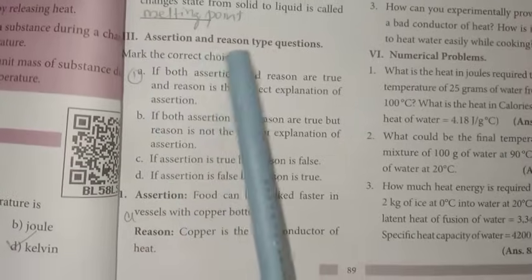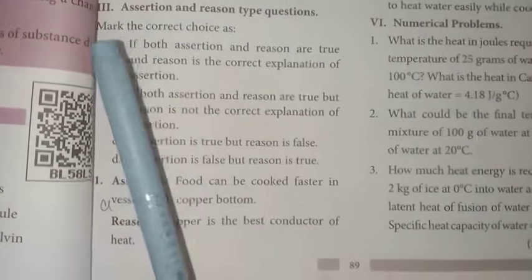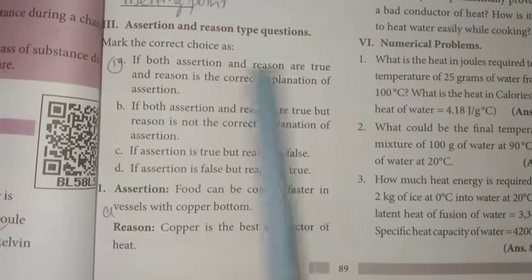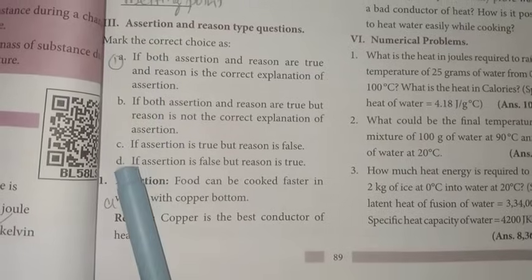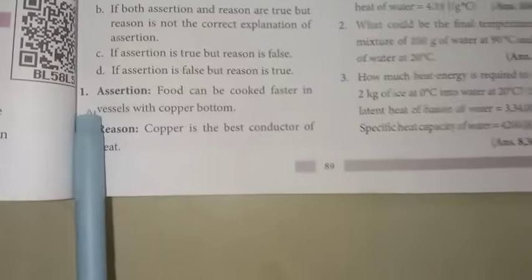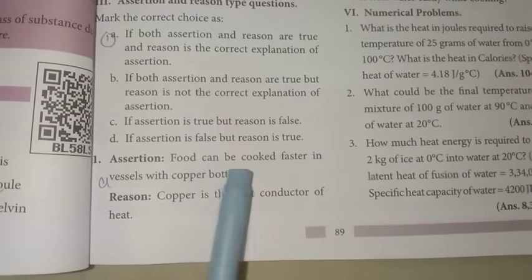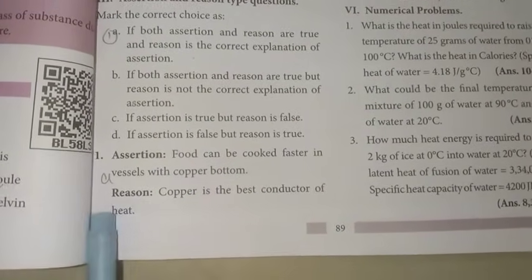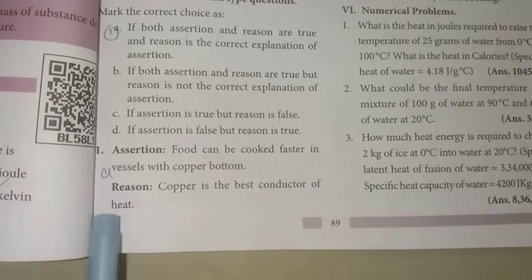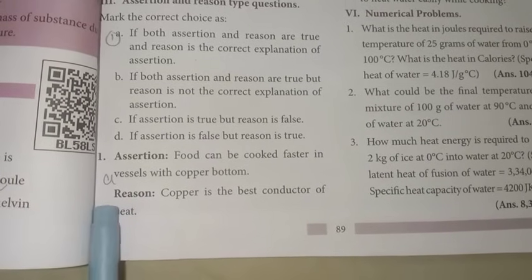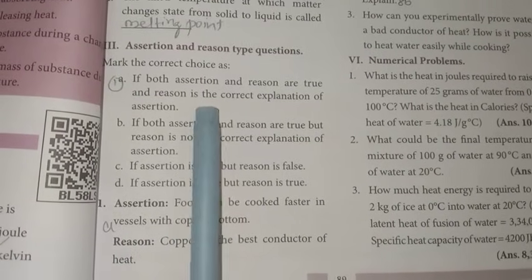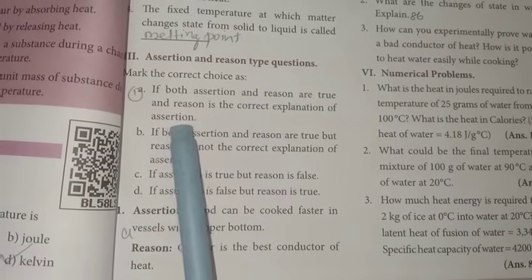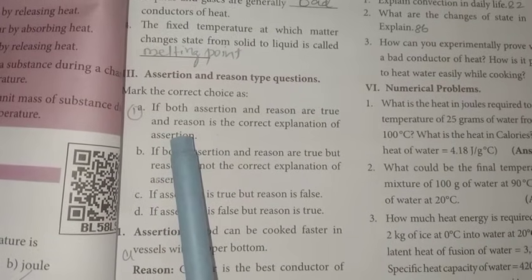Then assertion and reason type questions. Mark the correct choice as: First one, if both assertion and reason are true and reason... In the 5, you have a, b, c, d, and all options. First one, assertion: Food can be cooked faster in vessels with copper bottom. This is the right assertion. Copper is the best conductor of heat. This is the answer. A option. If both assertion and reason are true and reason is the correct explanation of assertion. A option is the right answer for first one.